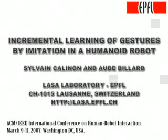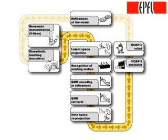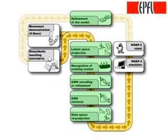In a programming by demonstration framework, the robot learns new skills by observing multiple demonstrations of a similar task. In the demonstration phase, the robot observes the user performing the skill. In the encoding phase, a probabilistic model encapsulating the essential features of the gestures is created or updated. In the reproduction phase, a generalized version of the gestures is retrieved by a dynamic simulator or by the robot.